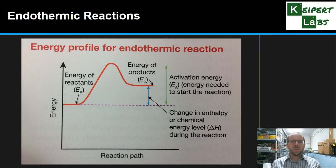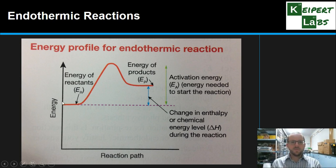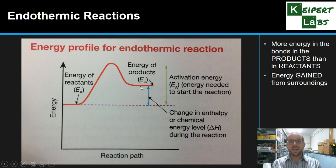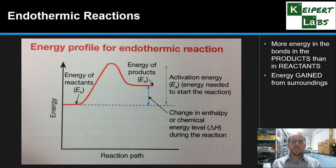Now we can look at an endothermic reaction, which is the opposite — a chemical reaction where energy has to go into the system. 'Endo' means into, so thermal energy is going into the system. Notice that if we start at the same point, the energy content of the products is up higher — there has been a positive increase in the energy content. There's more energy in the bonds of the products than in the bonds of the reactants. We still have our transition state and our hill, but we get less energy out at the other end than we had to put in. This energy is gained from the surroundings, which themselves would become colder. There is a net energy increase in the system — the particles that are reacting.